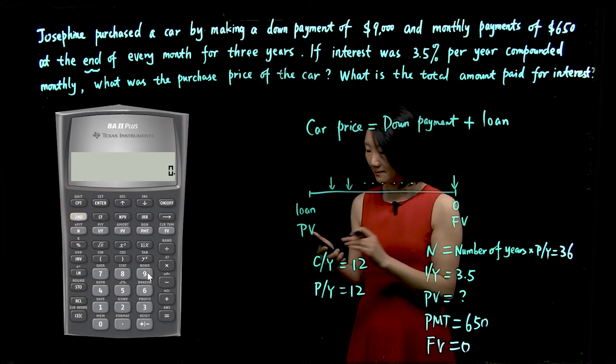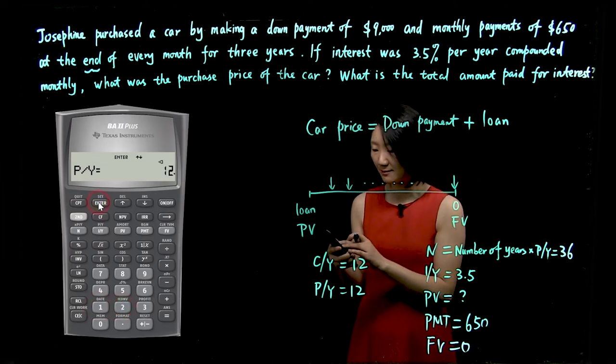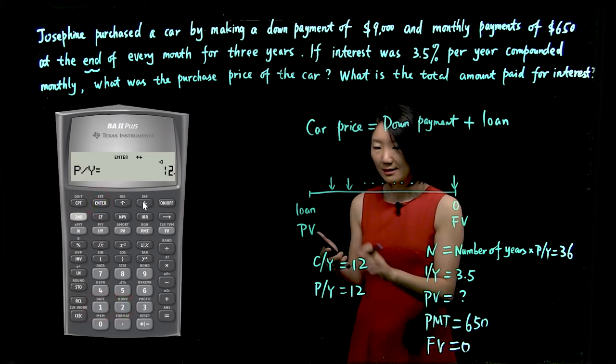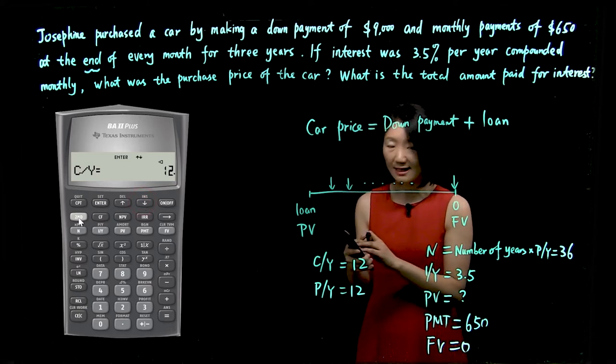Now for CY and PY, I go to second PY. So enter PY, 12, enter. Again, do not forget to push the enter button. Scroll down. CY is also 12. Great. Let's exit by pushing second and quit.